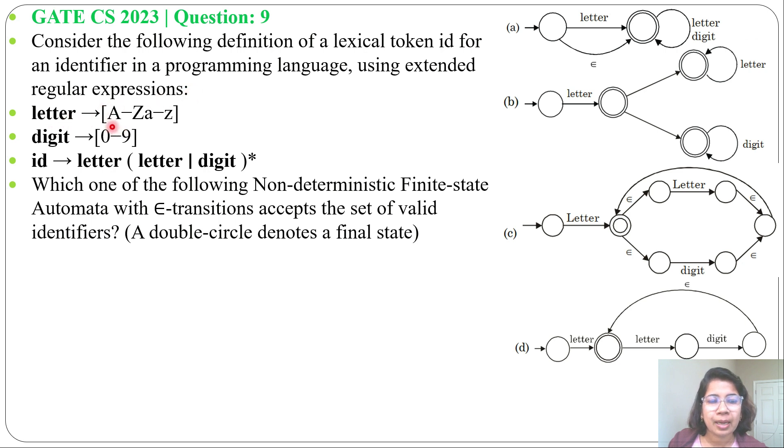Letter implies alphabets A to Z uppercase and A to Z lowercase. Then digit implies 0 to 9. ID implies letter, then letter or digit whole Kleene closure.